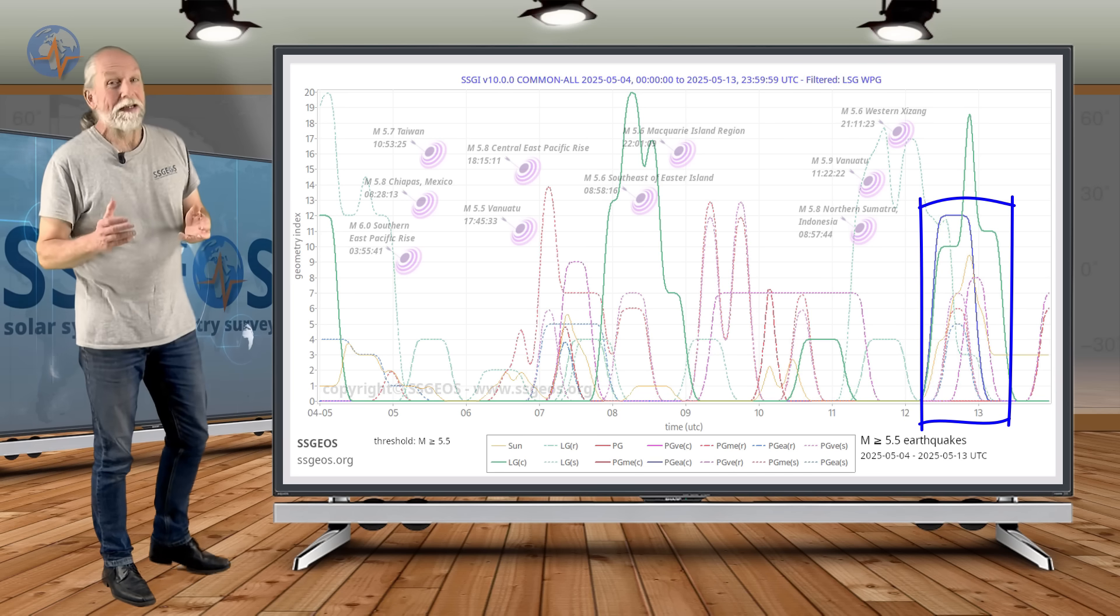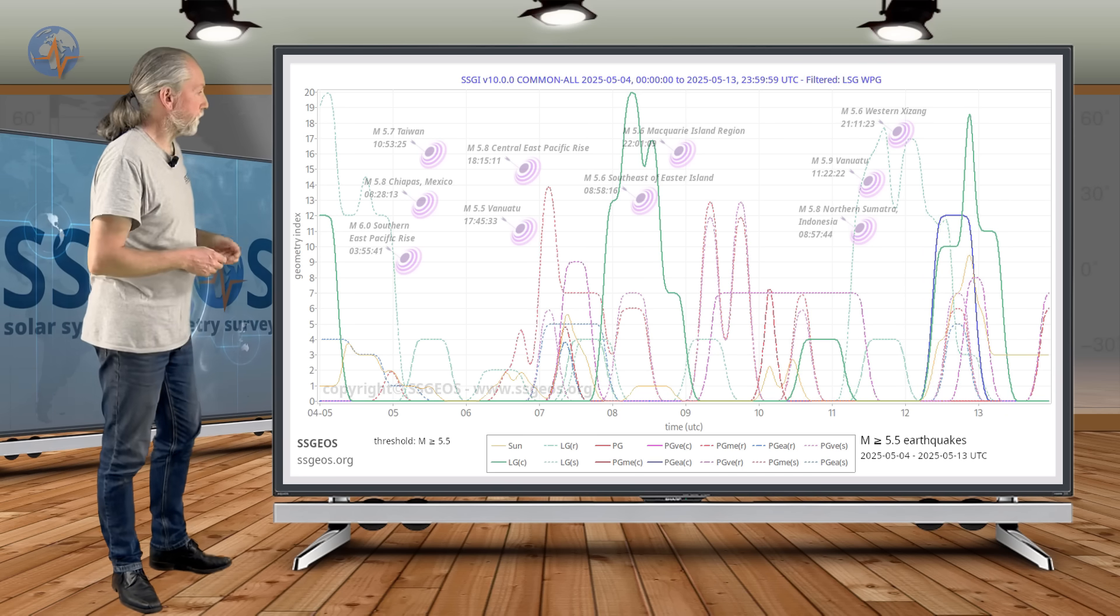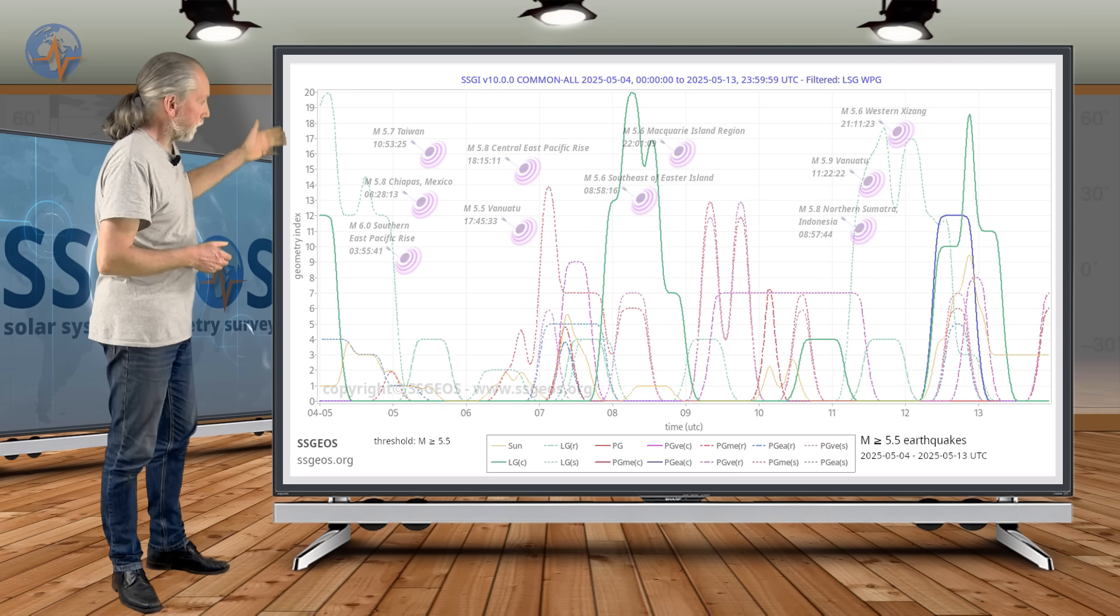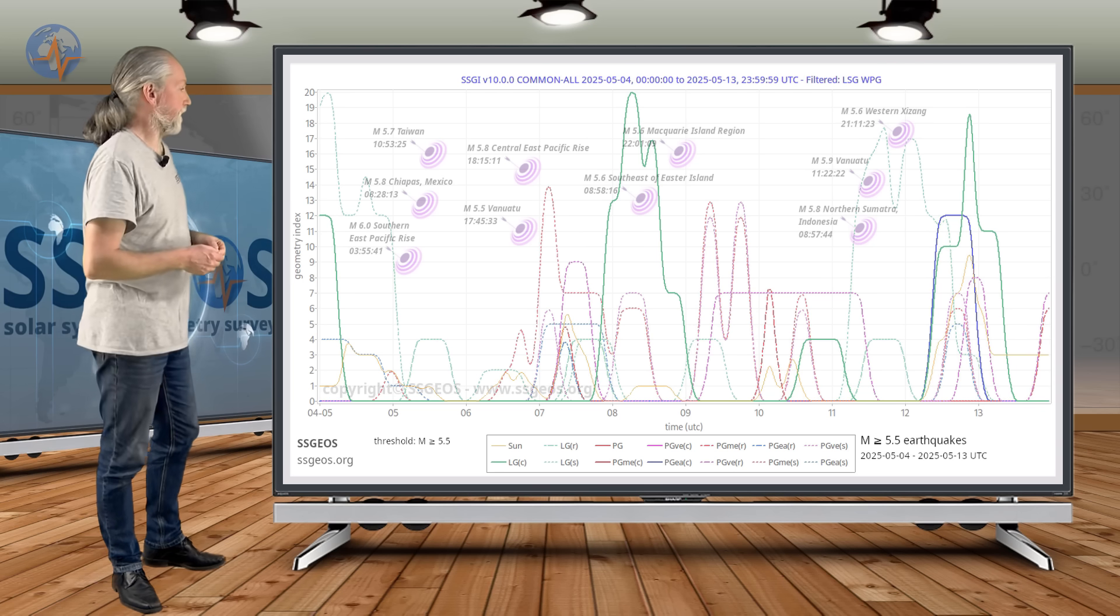We had a full moon yesterday converging with lunar conjunction with Uranus. You see the blue and the high green peak. There could be some seismic response later today or tomorrow, and it could reach magnitude 6.